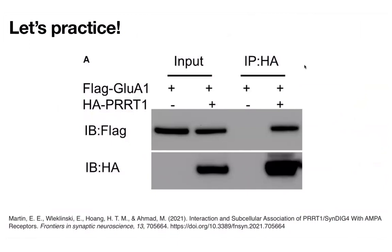Let's get some practice interpreting one of these blots. What you'll typically see is on top, a table with pluses and minuses, and on the left the input, and on the right the IP — your pulldown. Here, they're doing a pulldown against HA. The samples differ: one has flag-GluA1, a receptor with a flag epitope tag, and the other also has HA-PRRT1, another protein with an HA tag. So they're doing their immunoprecipitation against the HA, meaning they're pulling out HA-PRRT1.